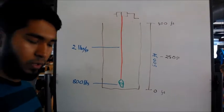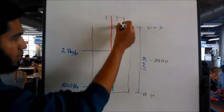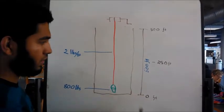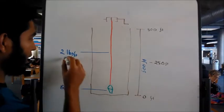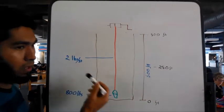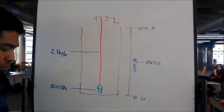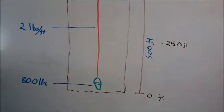So we're going to be doing problem number two. In our problem, the total length of the mine well is 500 feet, the cable weighs 2 pounds per foot, and the bucket weighs 800 pounds.